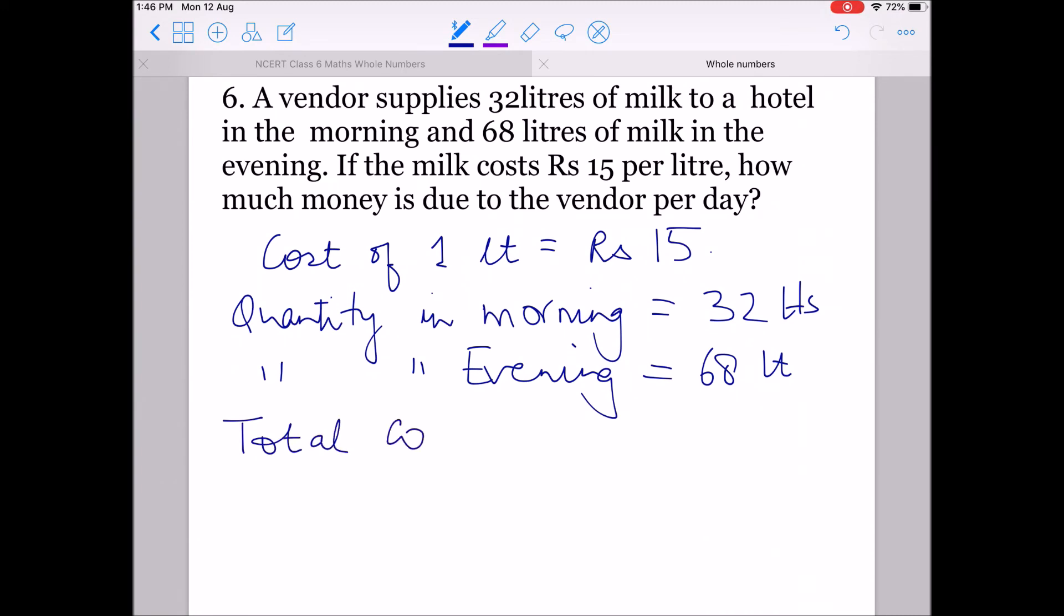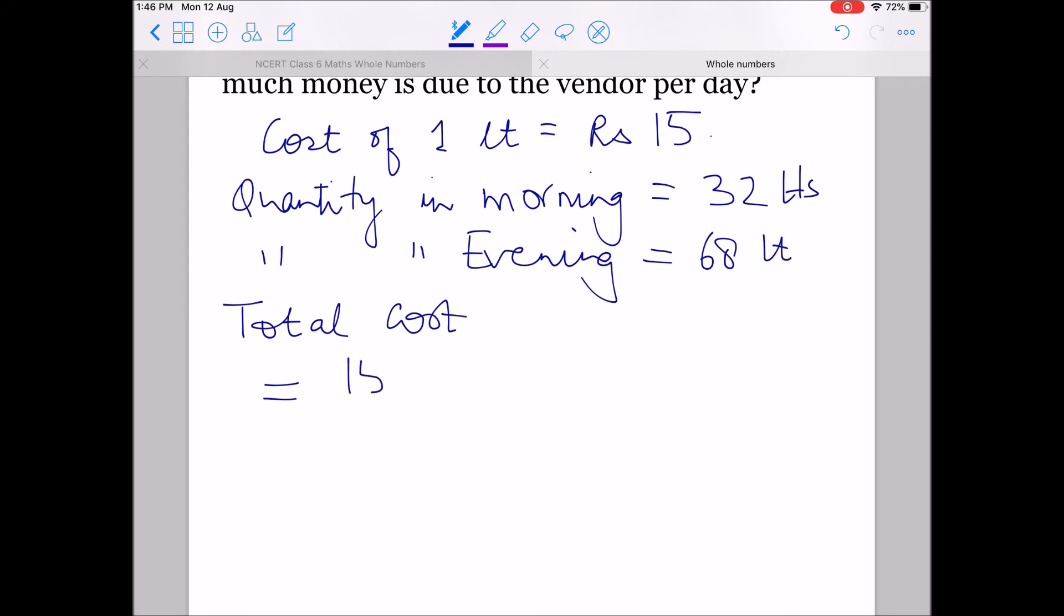So the cost will be 15 into 32 plus 15 into 68. I can take 15 common by distributive property and add 32 plus 68, so that means I am actually calculating the total quantity used.